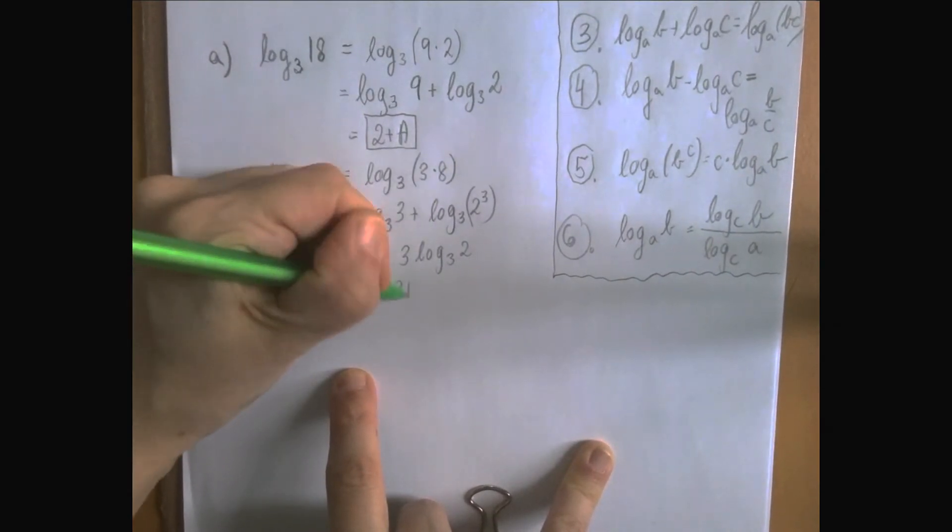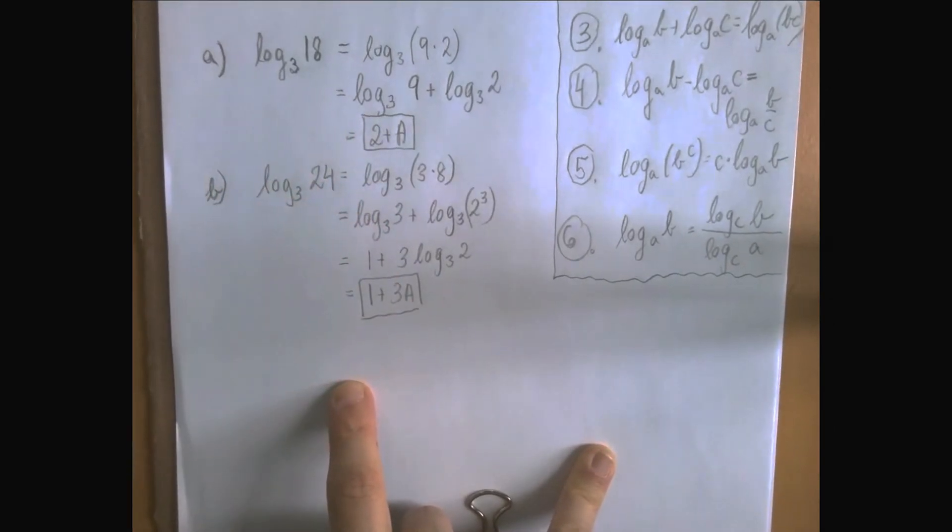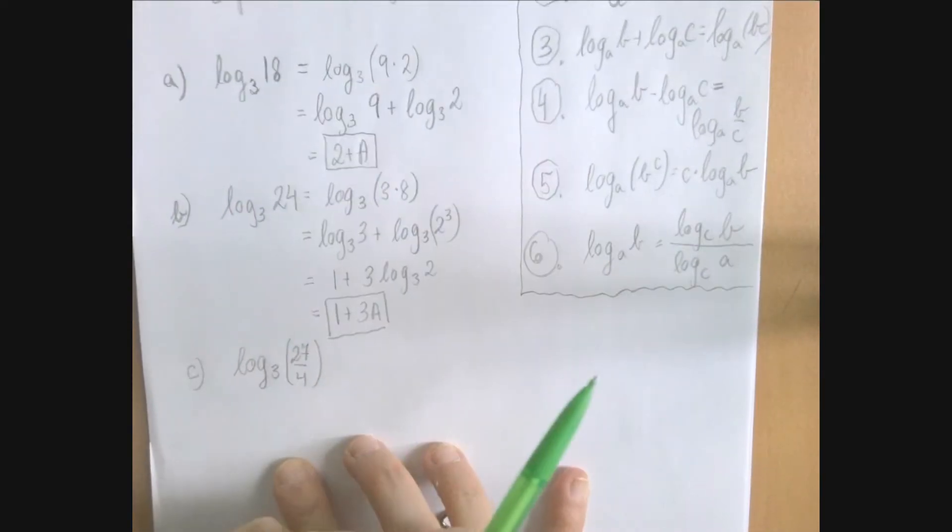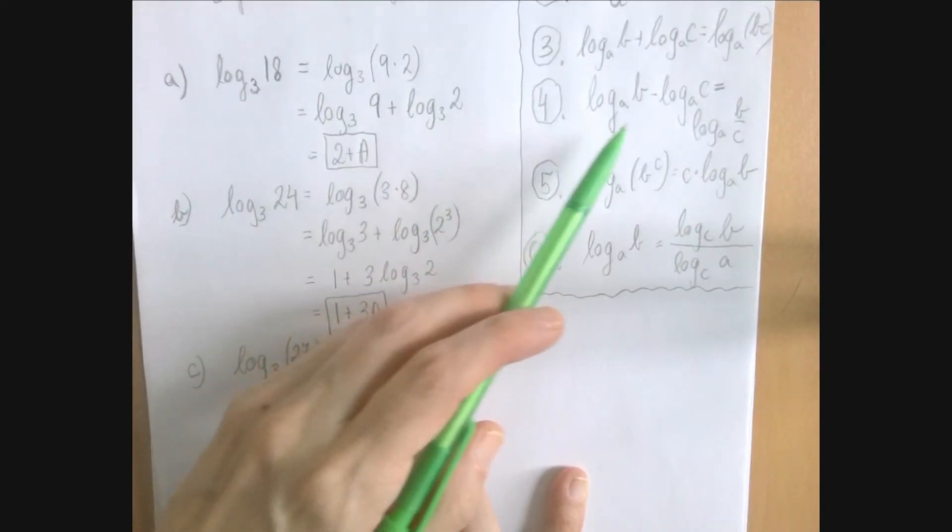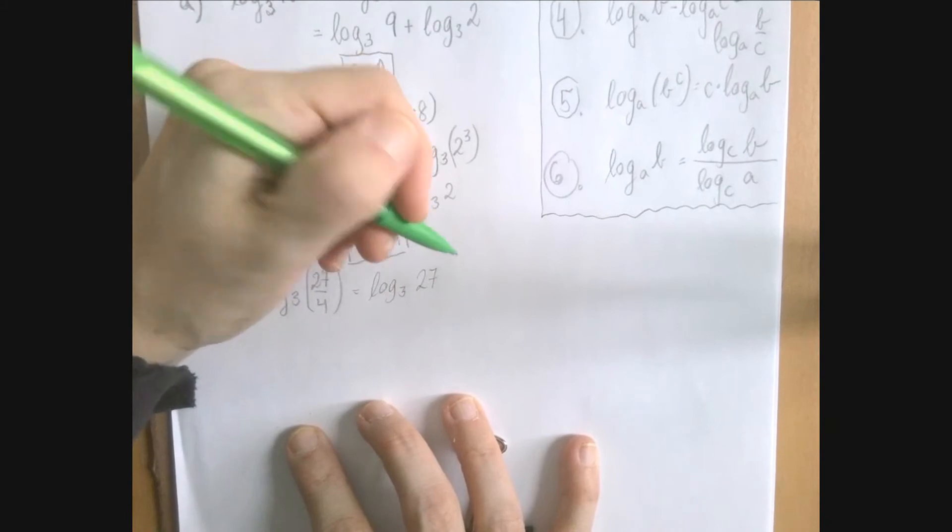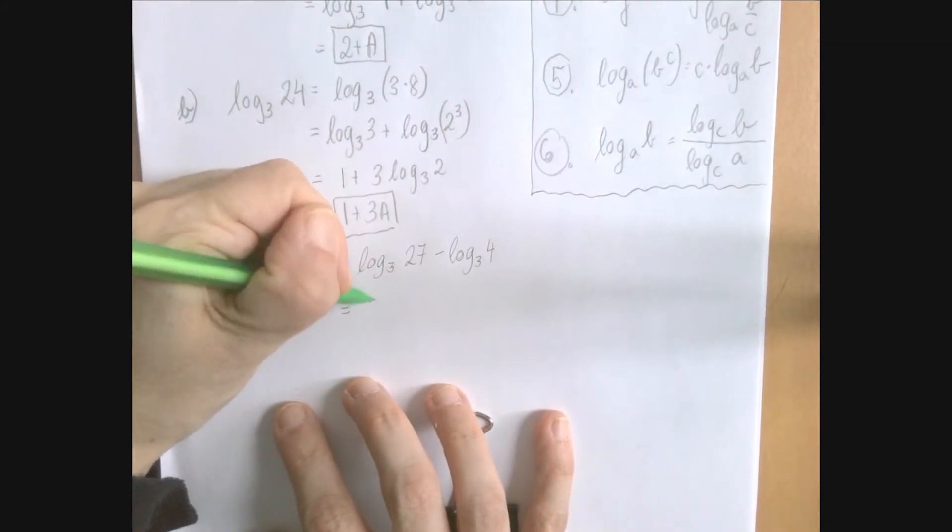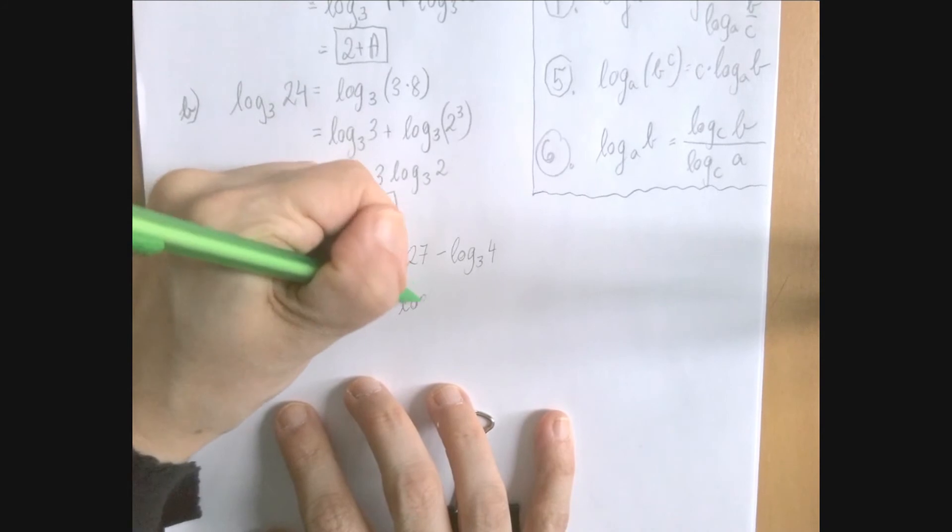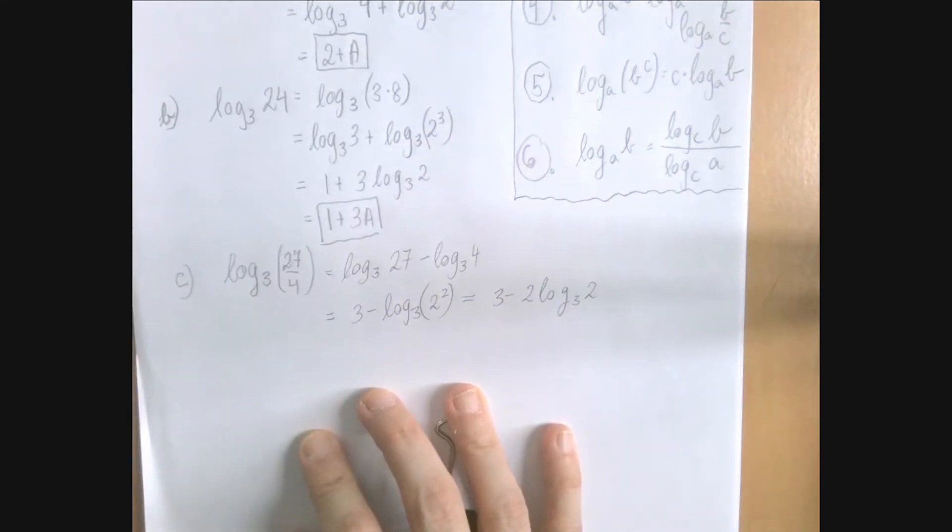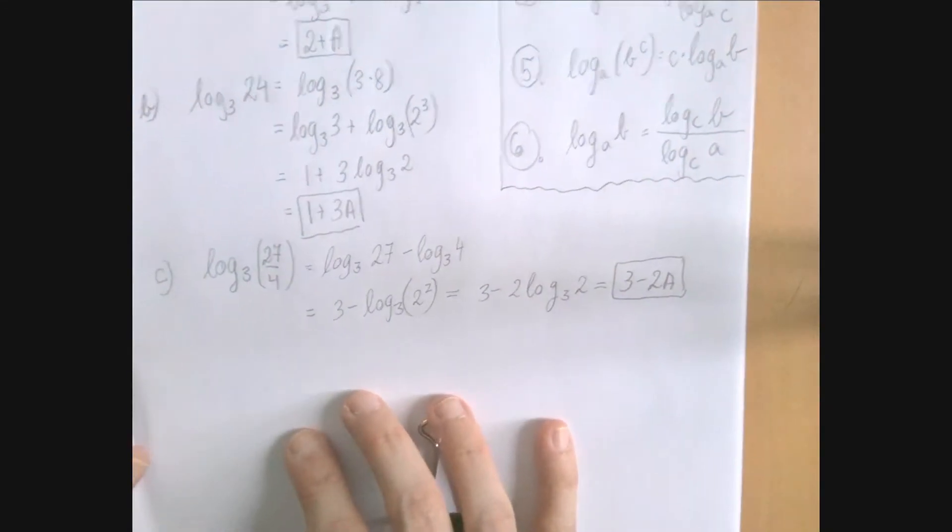So our answer is 1 plus 3a. If you look at the next example, log 3 of the fraction 27 divided by 4. Notice the numerator is a 3 power, the denominator is a 2 power. And we can separate the two by our newly found rule of logarithm. Log 3 of 27 over 4 equals log 3 of 27 minus log 3 of 4. Log 3 of 27 is 3. Log 3 of 4 is log 3 of 2 squared, which is 2 times log 3 of 2, which is 2a. So we have 3 minus 2a.